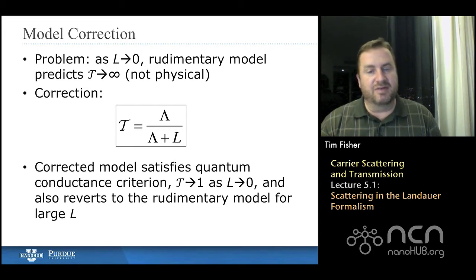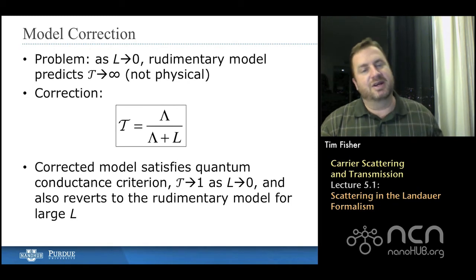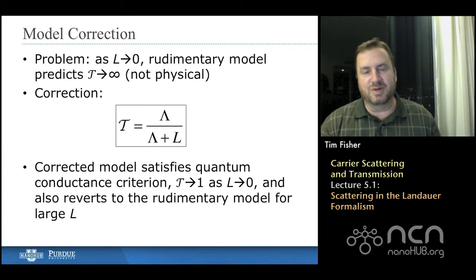As we would expect for a ballistic conductor. And then further, if the length gets very large relative to the mean-free path, then our intuition from the previous slide is upheld, because in an approximate sense, the transmission function will just be the ratio of the mean-free path to the length, because the extra term in the denominator of the mean-free path will be very small compared to the length.